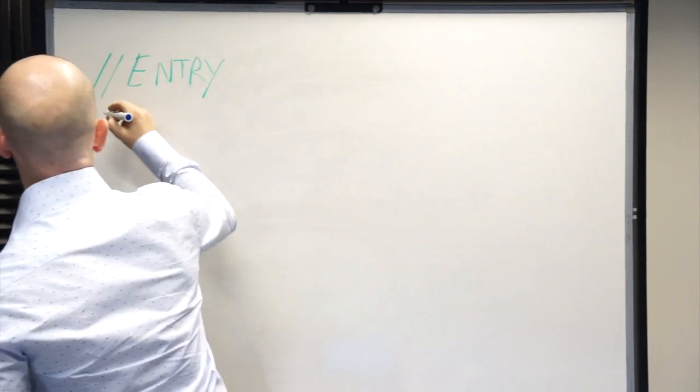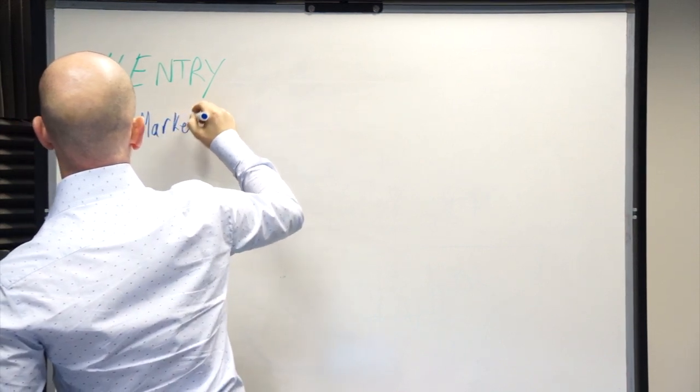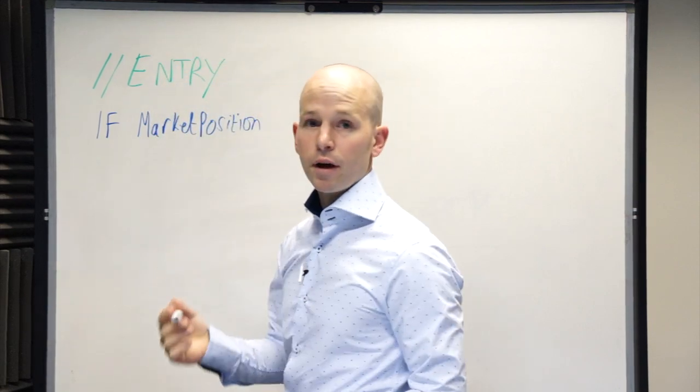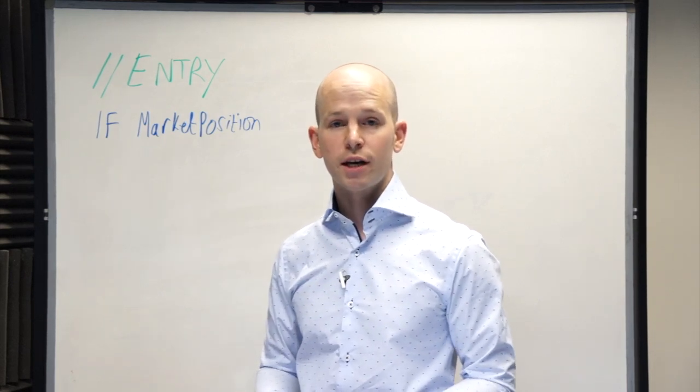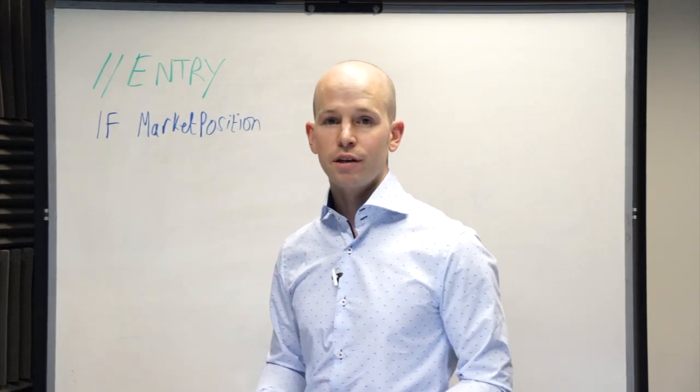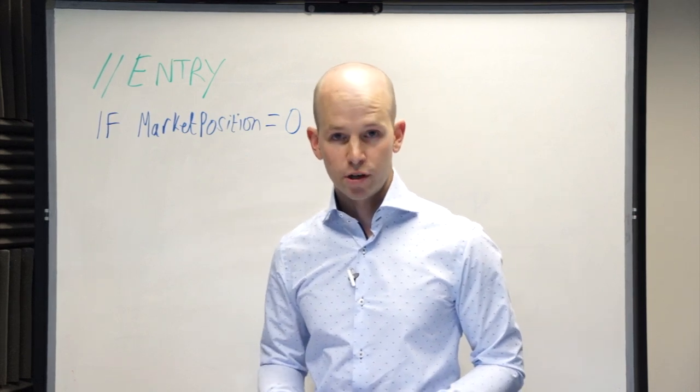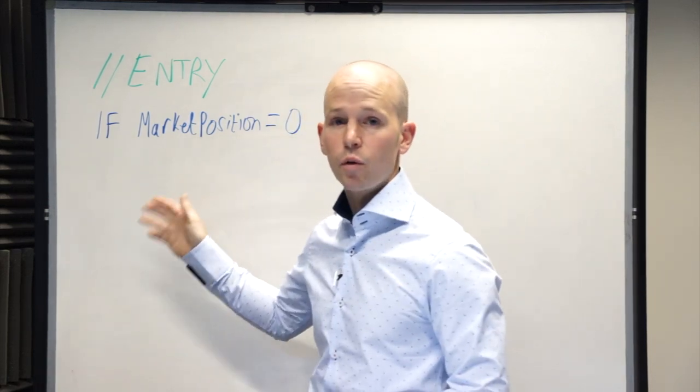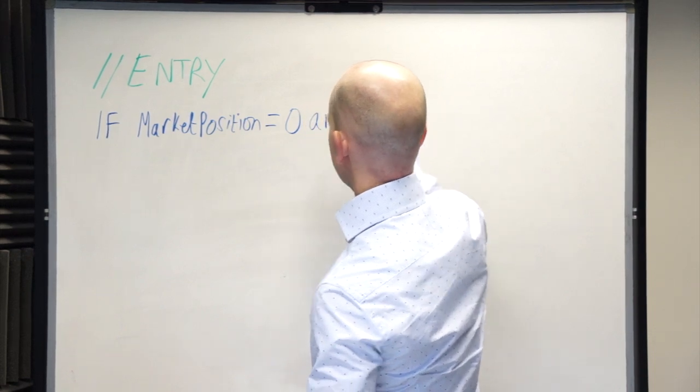So we start off with if the market position. Now that means the code is then, or the machine is then recognising or checking whether we're actually in a trade or not. So we want to only start this code if we're not in a trade. That is, a market position equals zero. If the market position was minus one, we'd be in a short trade. And if it was one, then we would have already been in a long trade. So just to get to start things off, if the market position is zero, we're not in a trade, then we can carry on.